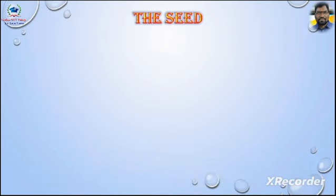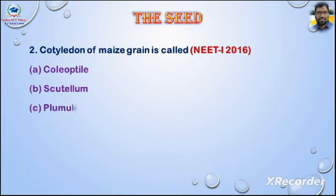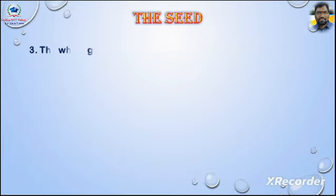Question number two: cotyledon of maize grain is called — asked in NEET 2016 phase one. Options: A) coleoptile, B) scutellum, C) plumule, D) coleorhiza. Answer is option B, scutellum.